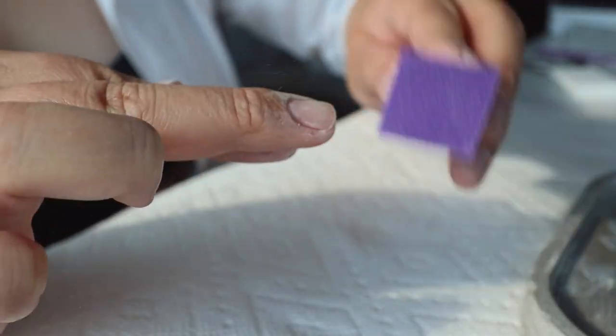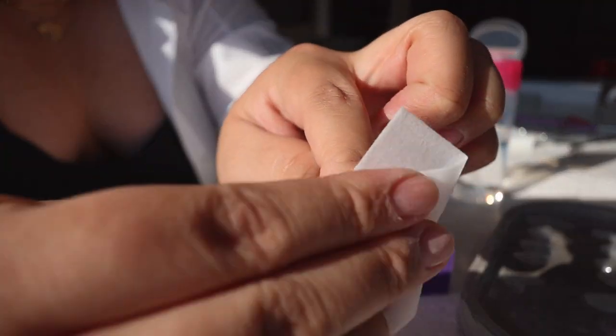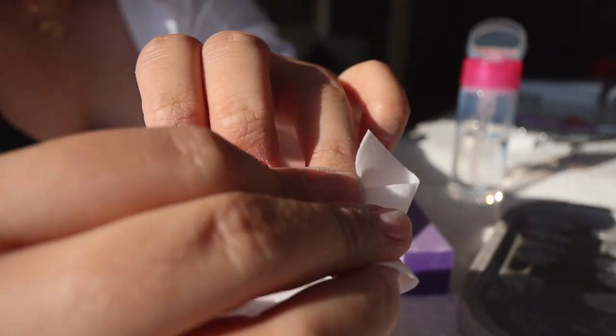Then I buffed out my nails using this nail buffer that I got off of Amazon in order to roughen them up so that the gel tips would apply better and last longer. I also cleaned off all of the residue using the lint-free wipes and some acetone.